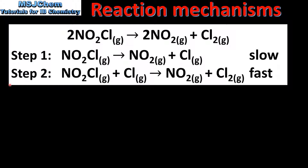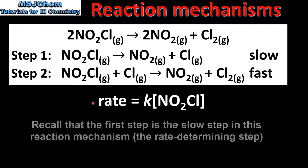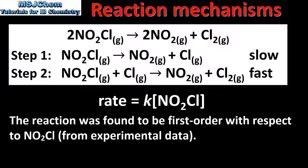Finally, we will see if the rate expression determined from the rate-determining step agrees with experimental data. The rate expression determined from step 1, the rate-determining step, shows the reaction is first order with respect to nitryl chloride. The reaction was also found to be first order with respect to nitryl chloride from experimental data. So the rate expression determined from the rate-determining step agrees with the experimentally determined rate expression. To summarize, this reaction mechanism has satisfied all three criteria. However, although we have evidence that supports this reaction mechanism, we can never be sure that it represents the actual chemical change taking place.